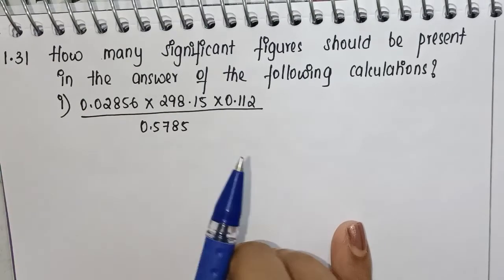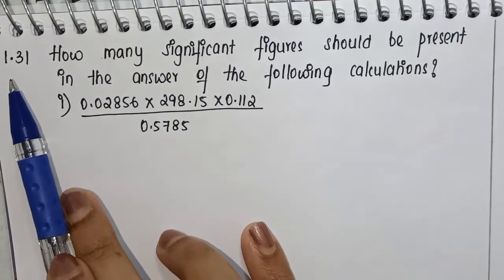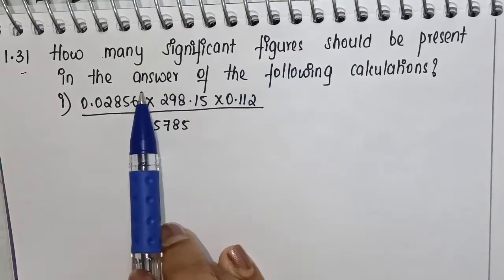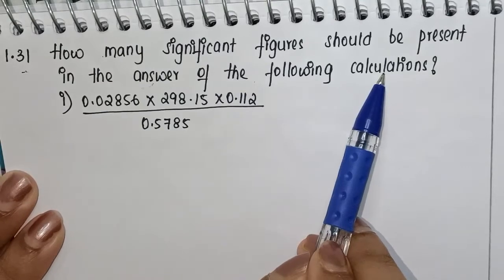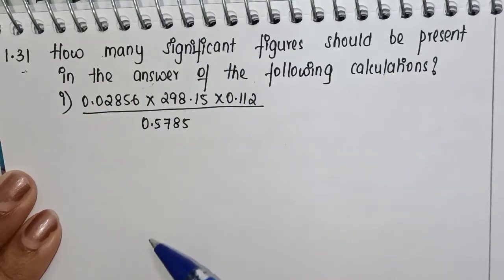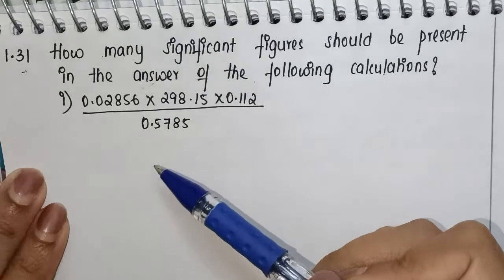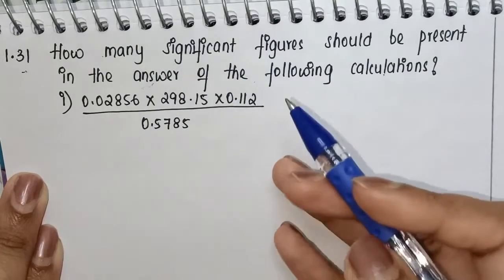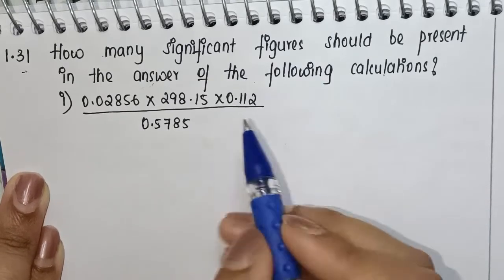In this video, we're going to cover question number 1.31: How many significant figures should be present in the answer of the following calculations? We have three questions, so we will solve one by one and find out how many significant figures are there after you solve each question.